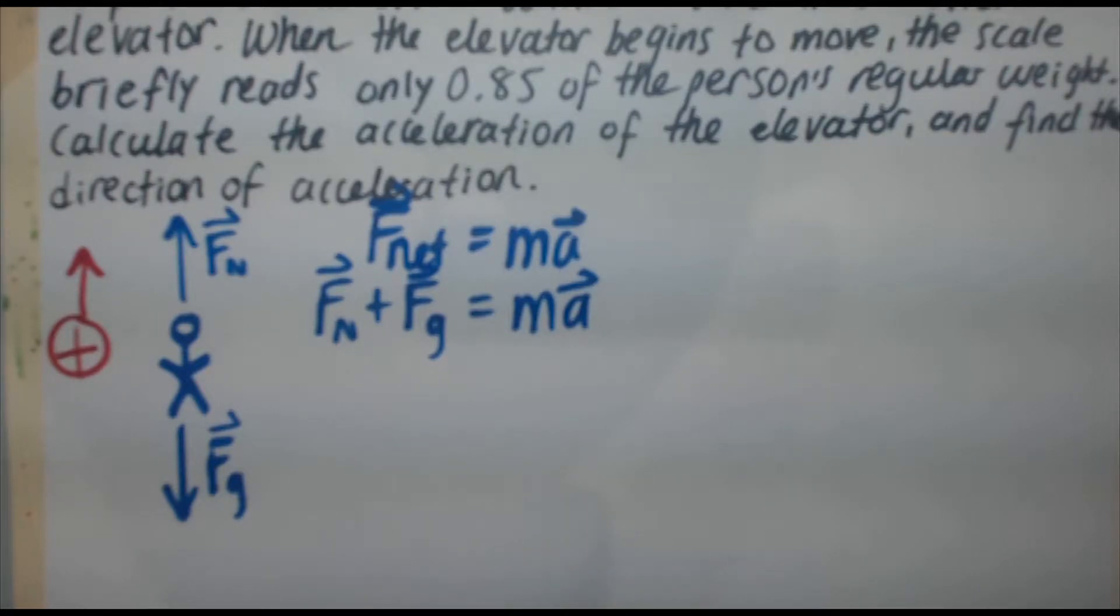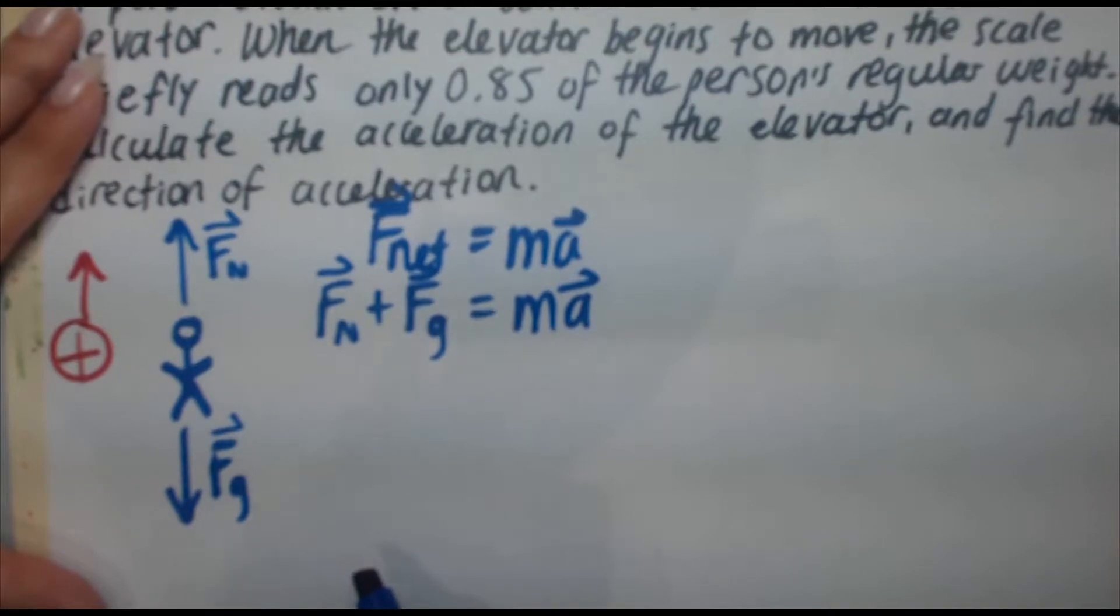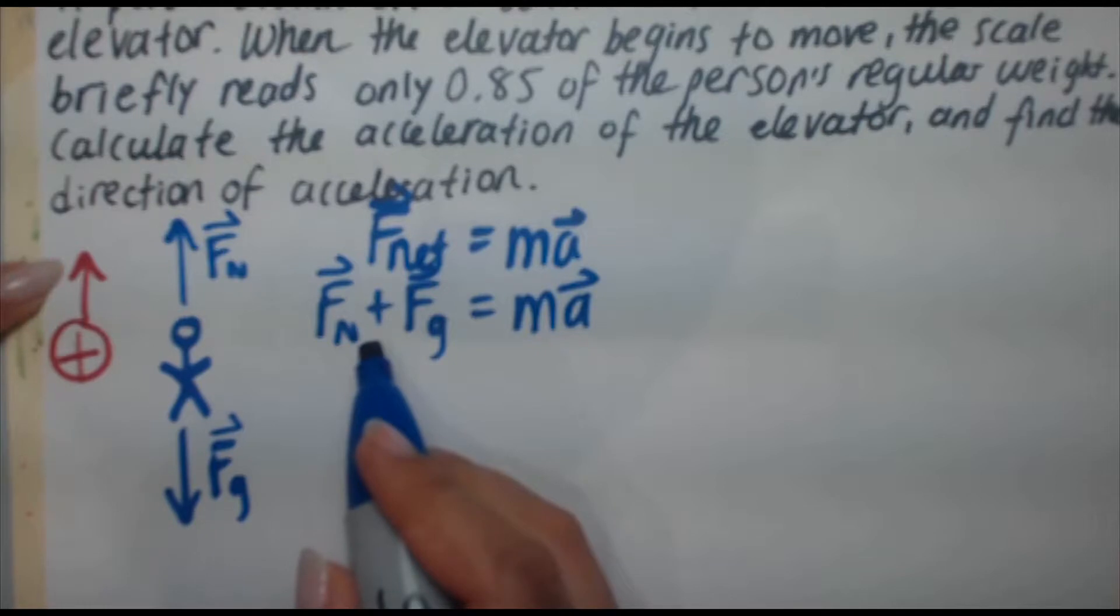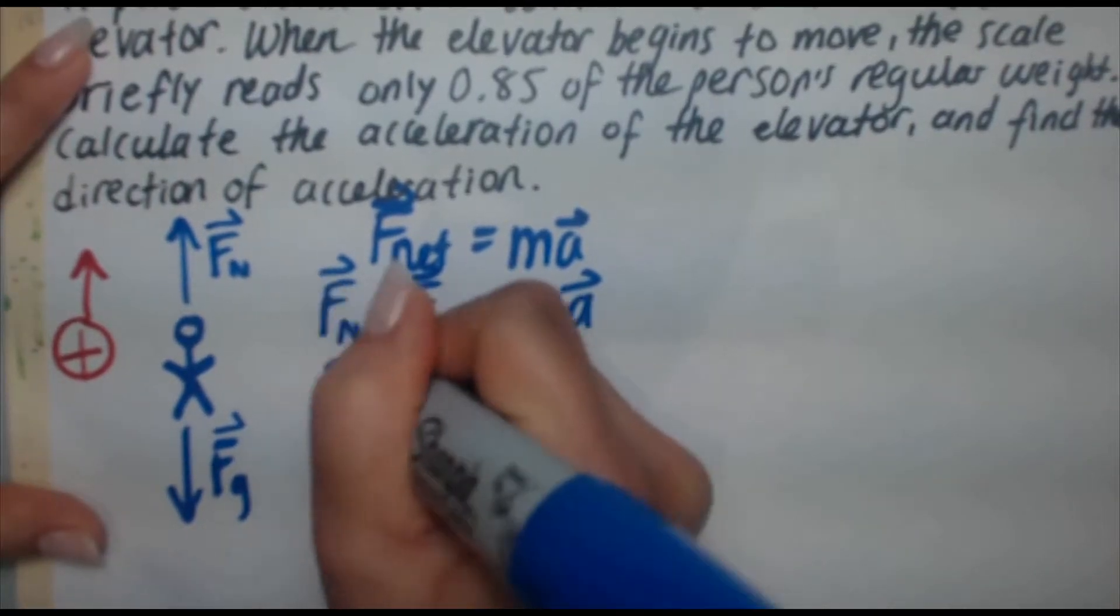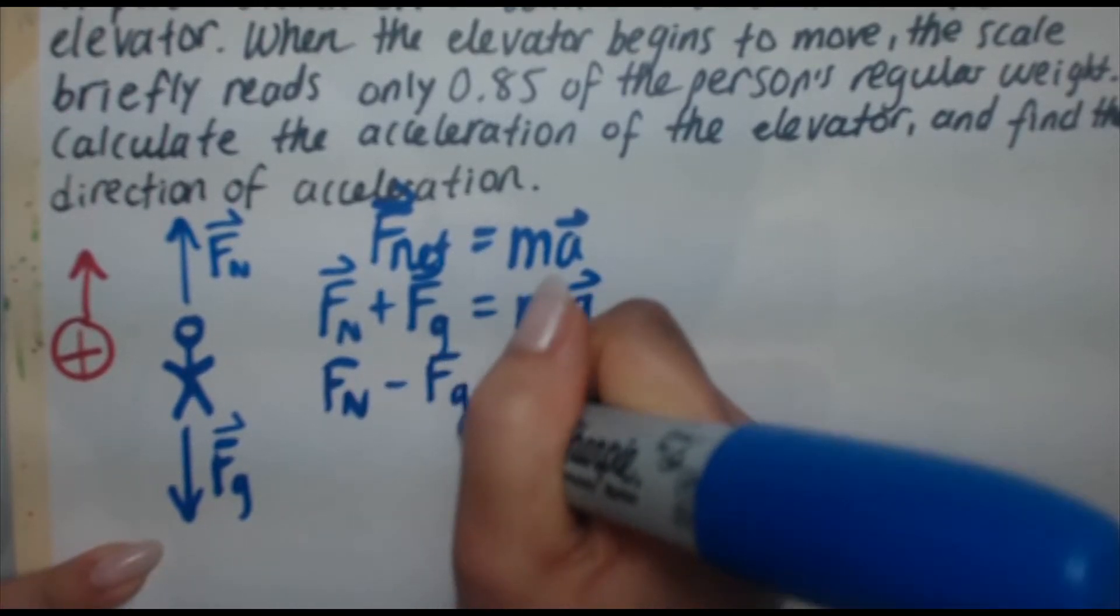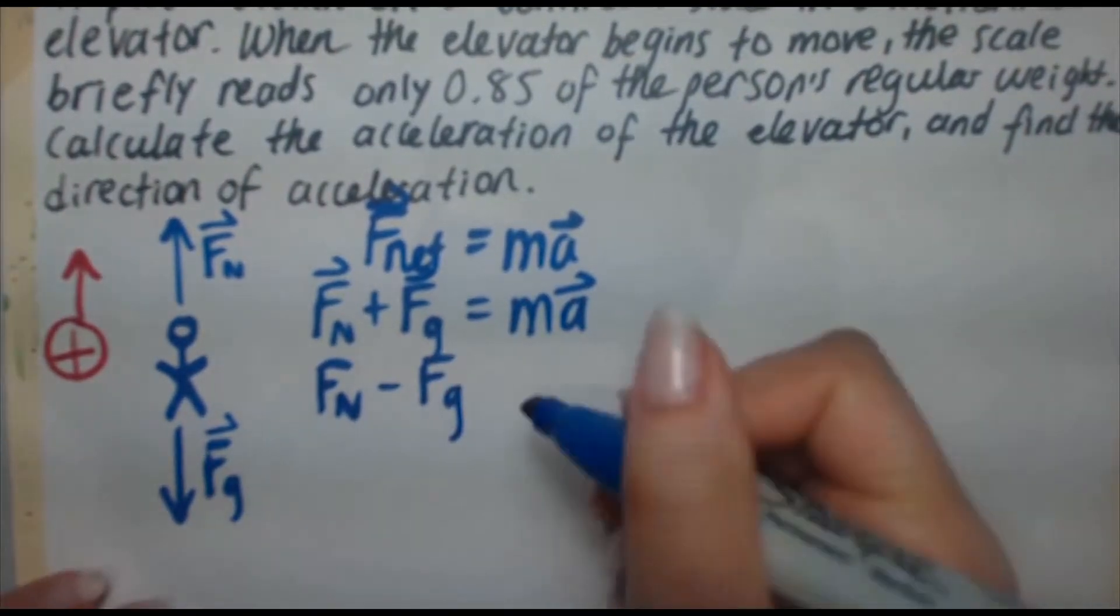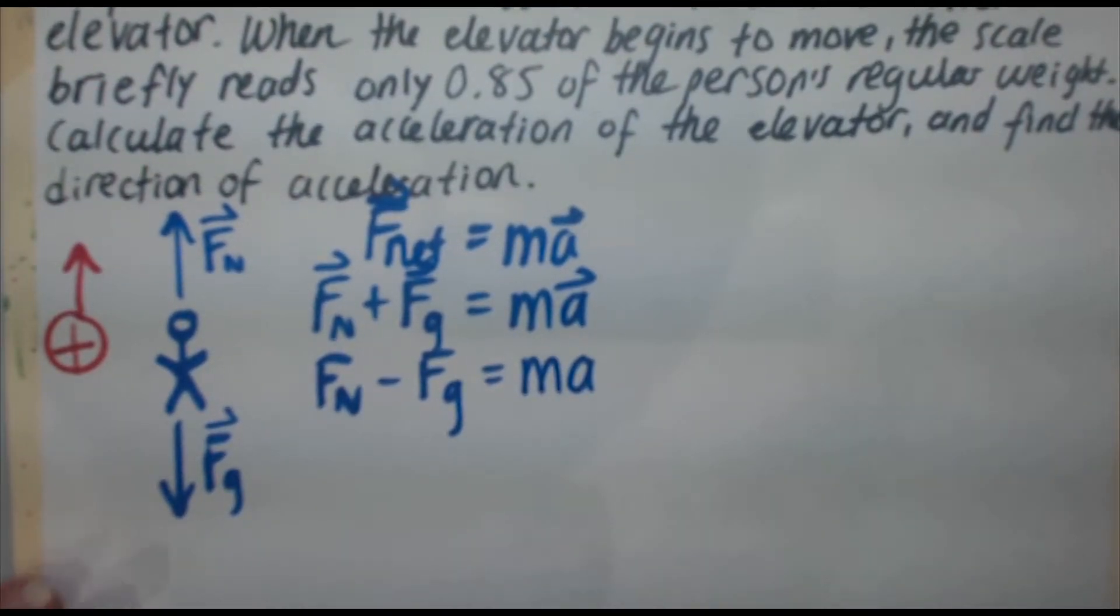Okay, if I want to drop those vector symbols, I need to now assign positive or negative signs. So, according to my directions here that I've established, up is positive. So, F_n will be positive and therefore F_g is going in the negative direction. So, we drop our vector symbols and we say F_n minus F_g equals ma. Now, you can drop the symbol for the a as well.